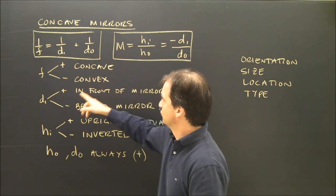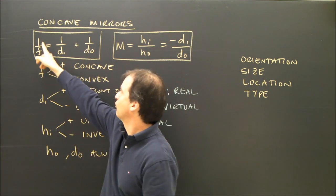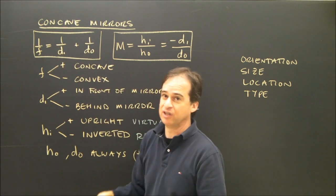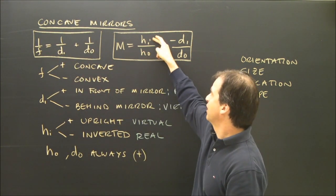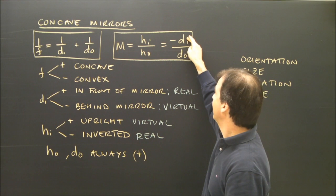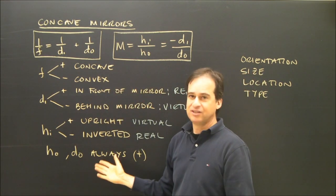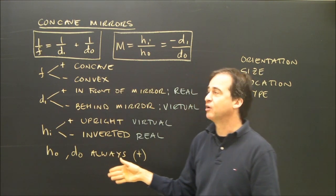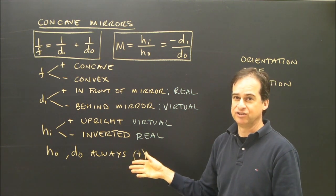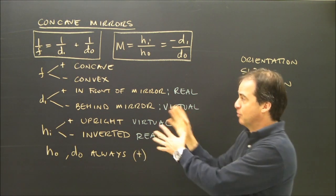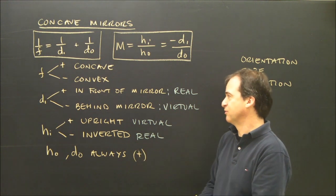So these are our variables. The two formulas we have is 1 over f equals 1 over di plus 1 over do. And magnification is hi over ho or negative di over do. All this is very similar to what you're going to see when we talk about the same sign convention for lenses. But we're talking about mirrors, so I want to make one specifically for that.